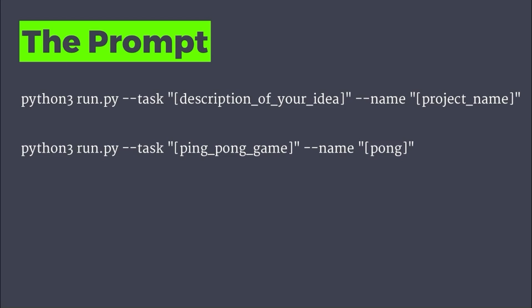And then this is the prompt — once we've done all that, you're going to run this prompt, which is 'python3 run.py task', then you put your description of your idea in here, and then you name your project there. The example here that I've done is a ping pong game named Pong. So that'll be the example that I use.